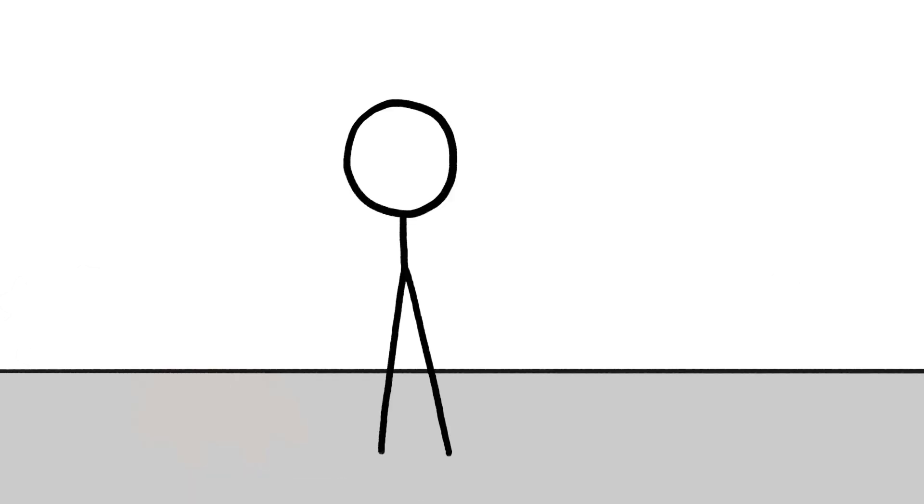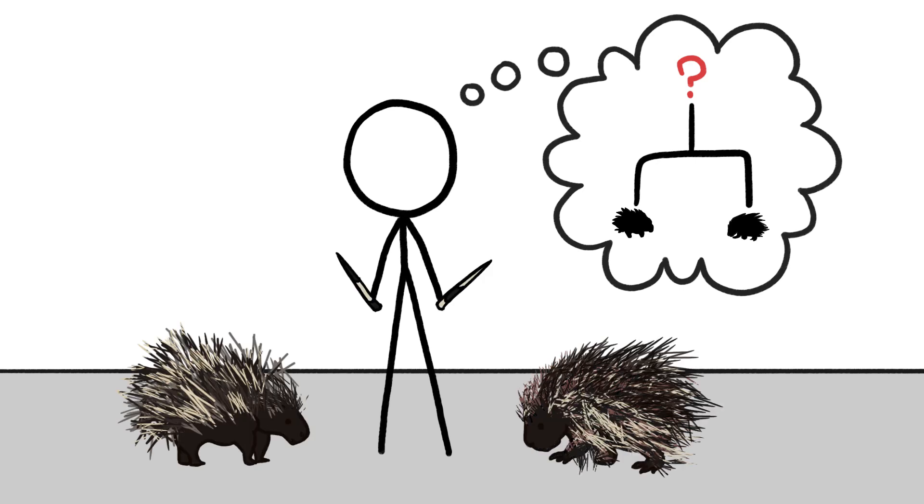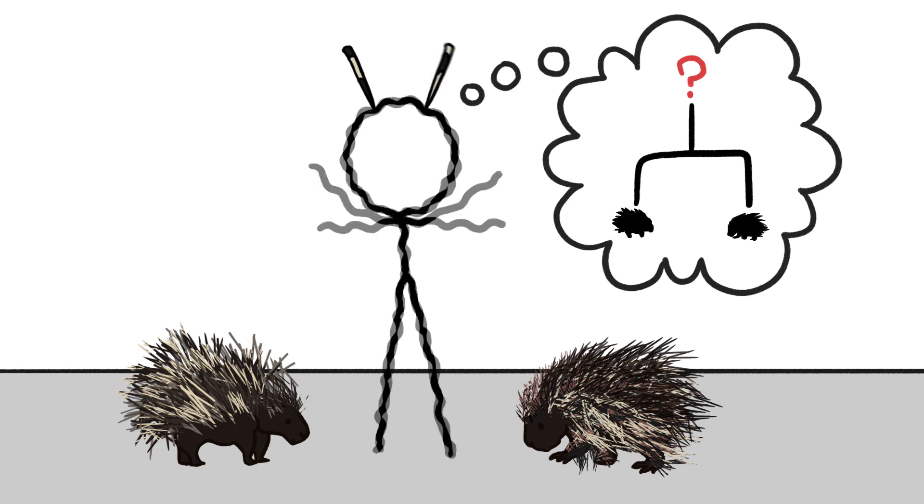So it turns out, if you're trying to determine how two things are related, you can't just use one or two data points, even if they're very pointy.